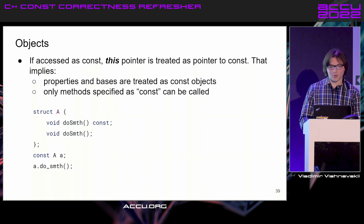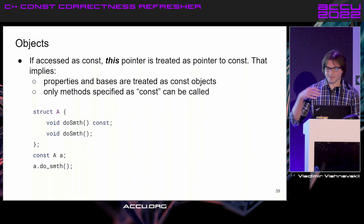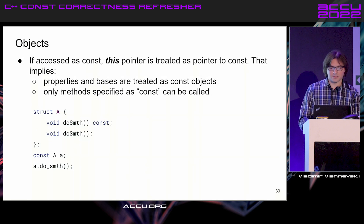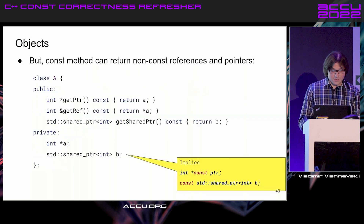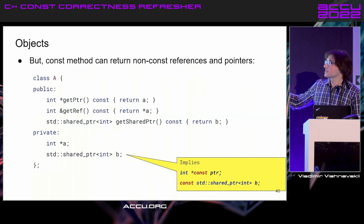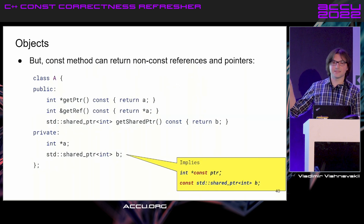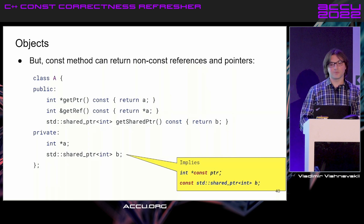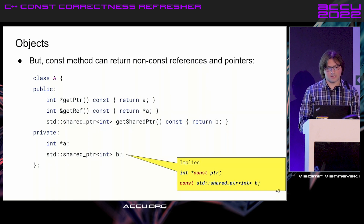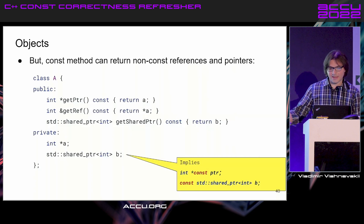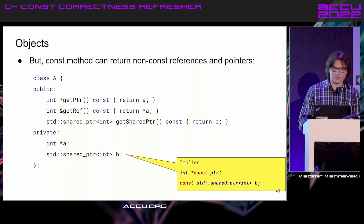When an object is accessed as const, the this pointer is treated as pointer to const. This has a recursive consequence: all properties are treated as const objects and only methods marked const can be called. This implies that with const pointers or shared pointers, the pointer objects cannot be modified, but the data they reference can still be modified and can be returned from const methods — meaning constness is not propagated to owned data, only to the object itself.